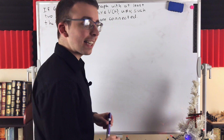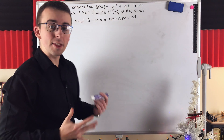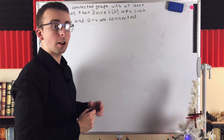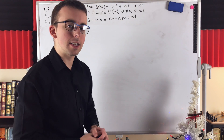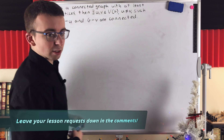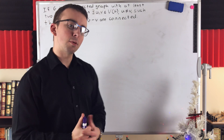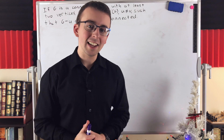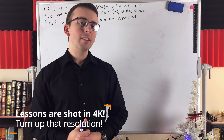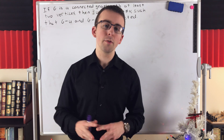If G is a connected graph with at least two vertices, then there exist two distinct vertices U and V in the graph such that G minus U and G minus V are both connected. We'll be proving this result in today's Wrath of Math lesson. It's not super surprising, but it's also not totally obvious, so it makes for a fun proof.